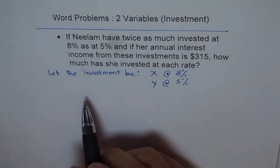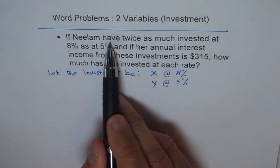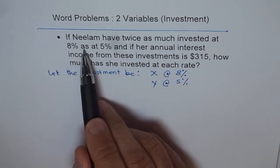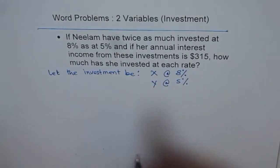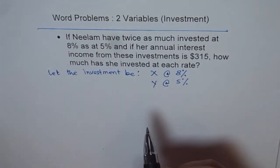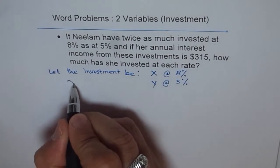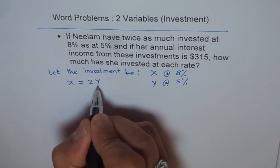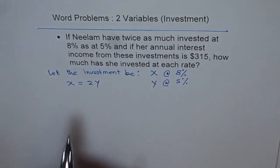Now, let's read the question again. If Neelam have twice as much invested at 8% as at 5%, that means X is 2 times Y. Do you see that? That is the second condition. From here we get X is 2 times Y.